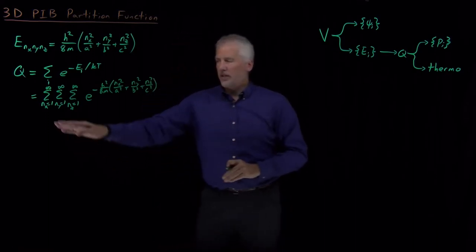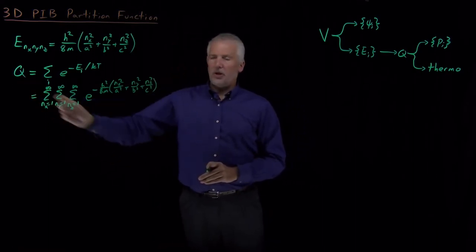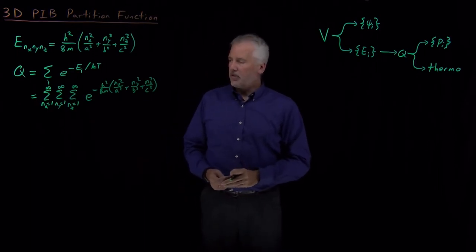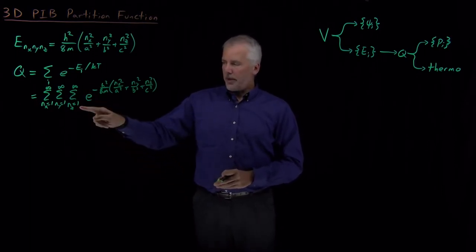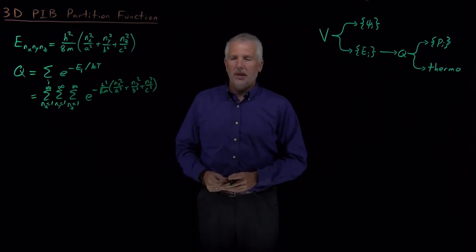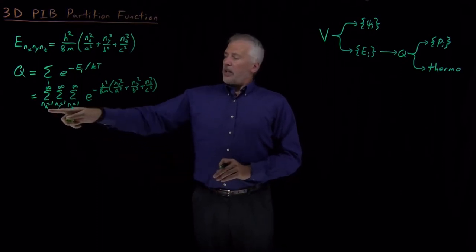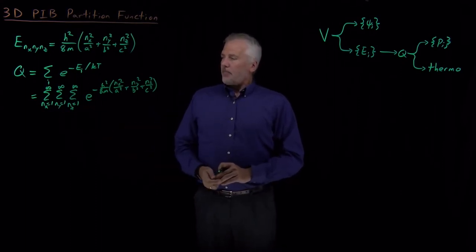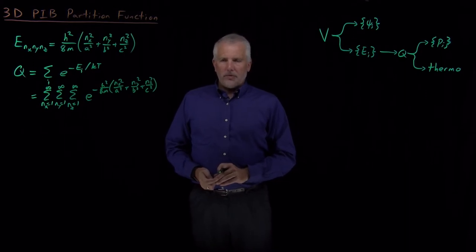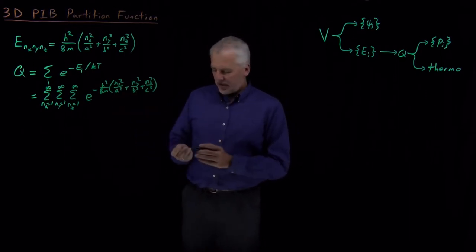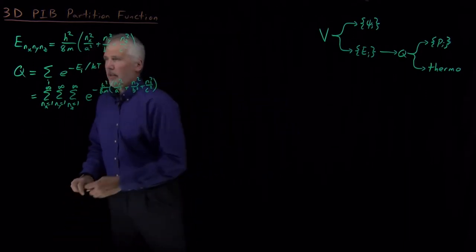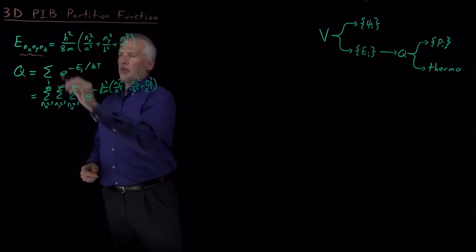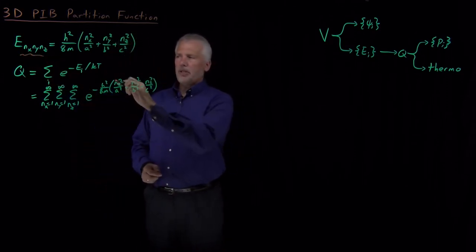Okay, so that's the sum we need to compute in order to figure out what the partition function is, and that looks like a lot of work. It looks like an infinite amount of work three different times. So that's slightly challenging, but we can make use of a shortcut that we've talked about before. If we notice that this energy, the energy of the 3D particle in a box, is the sum of three separate terms.